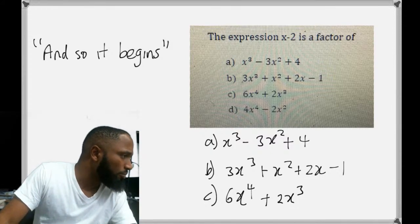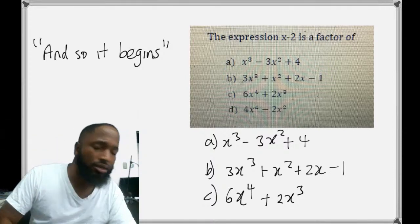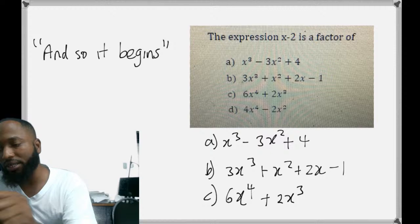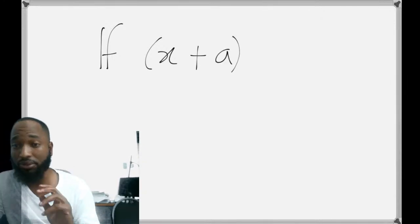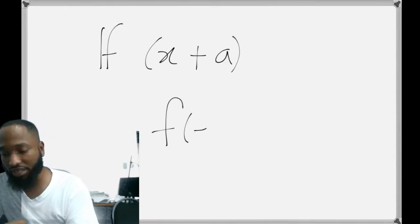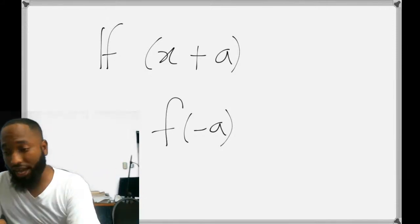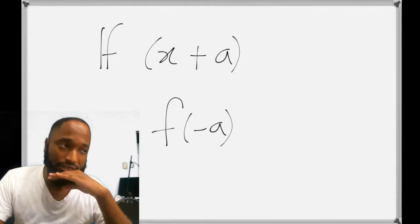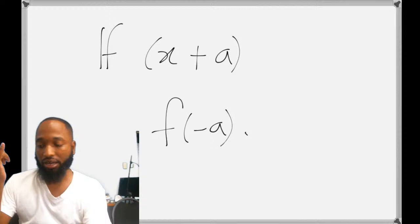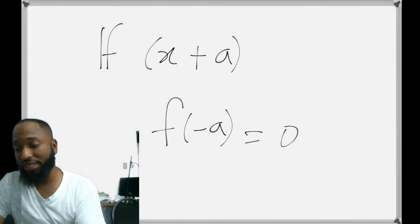A. So most people saying A or B, A or B. So the thing with admats, knowing if something is a factor, like if x + a is a factor of something, it means that f of negative a, if you substitute the additive inverse of this number into the function, you're supposed to get zero. That's called the factor theorem.